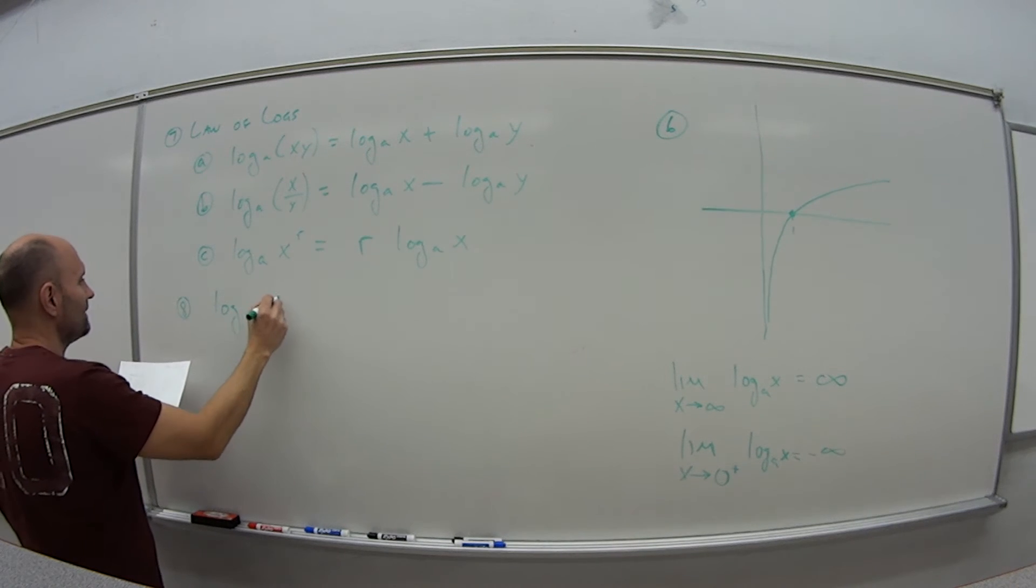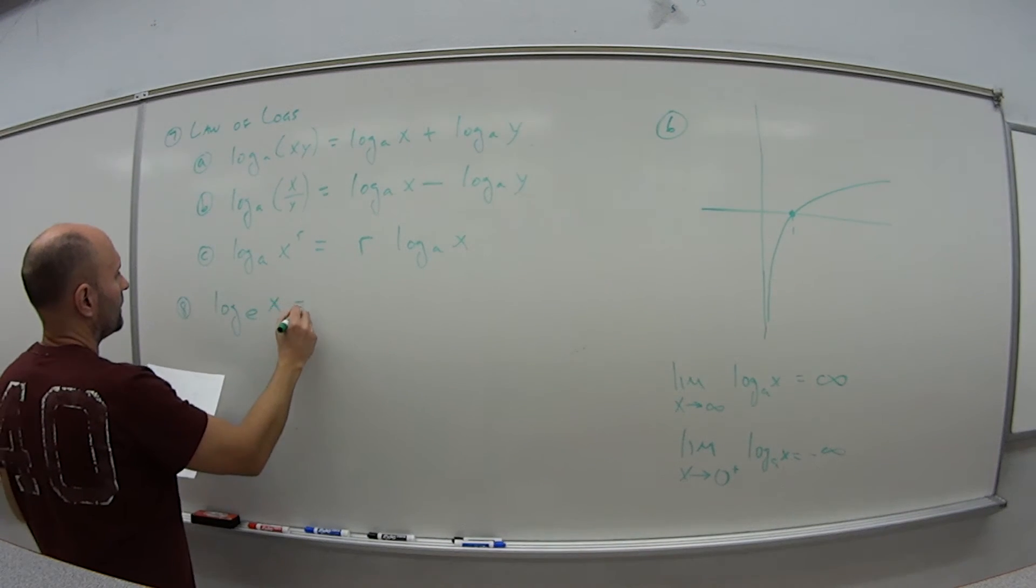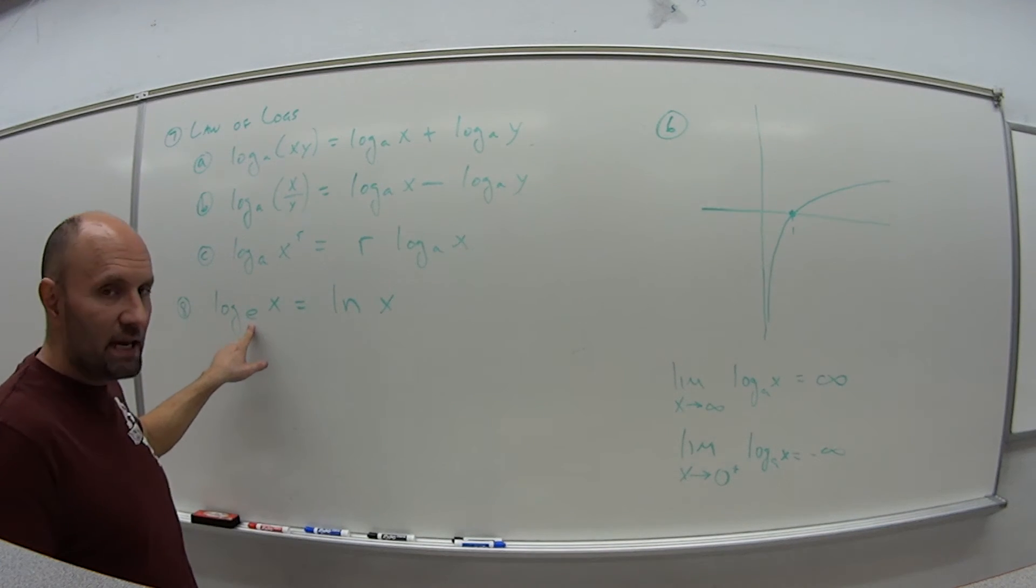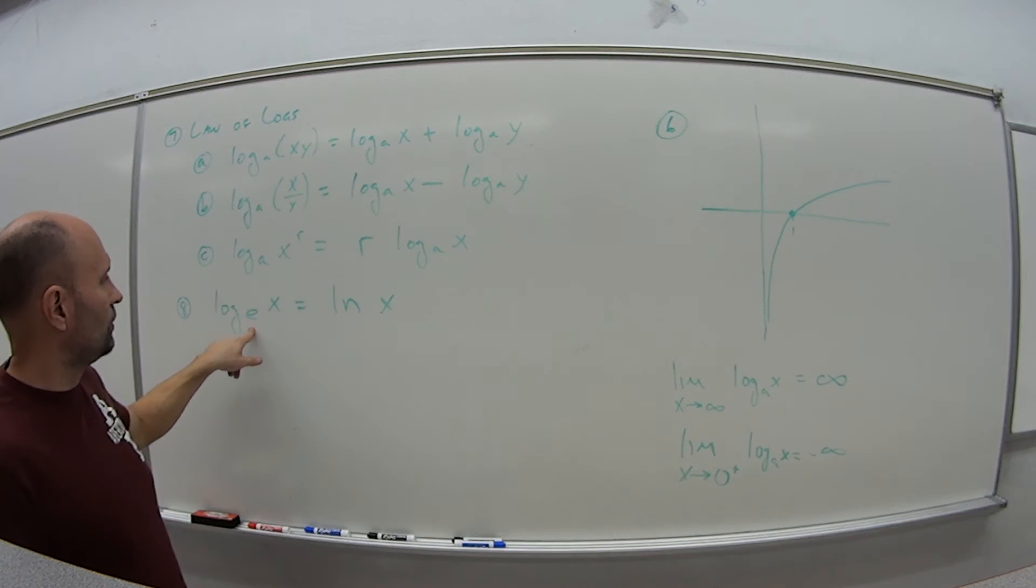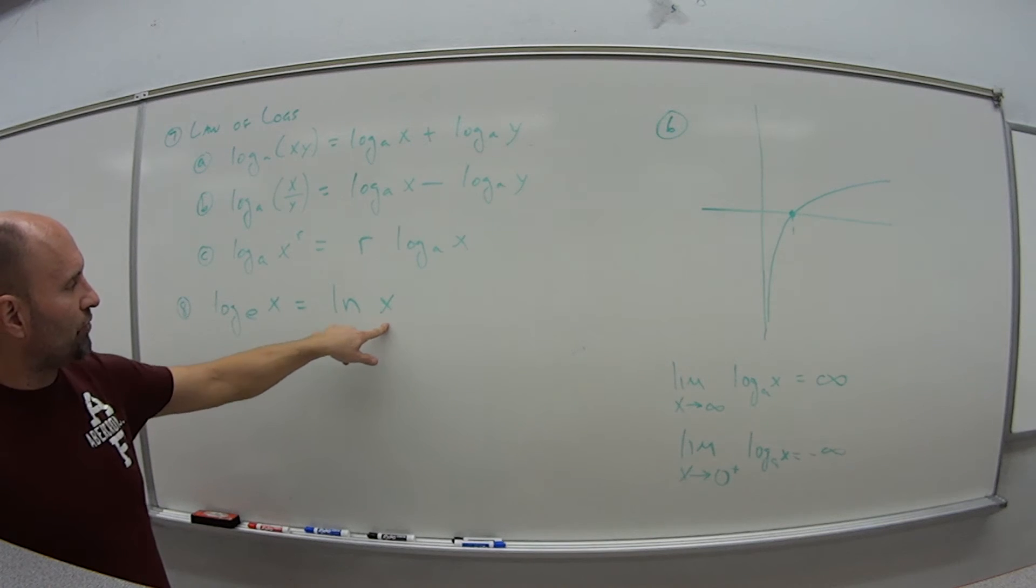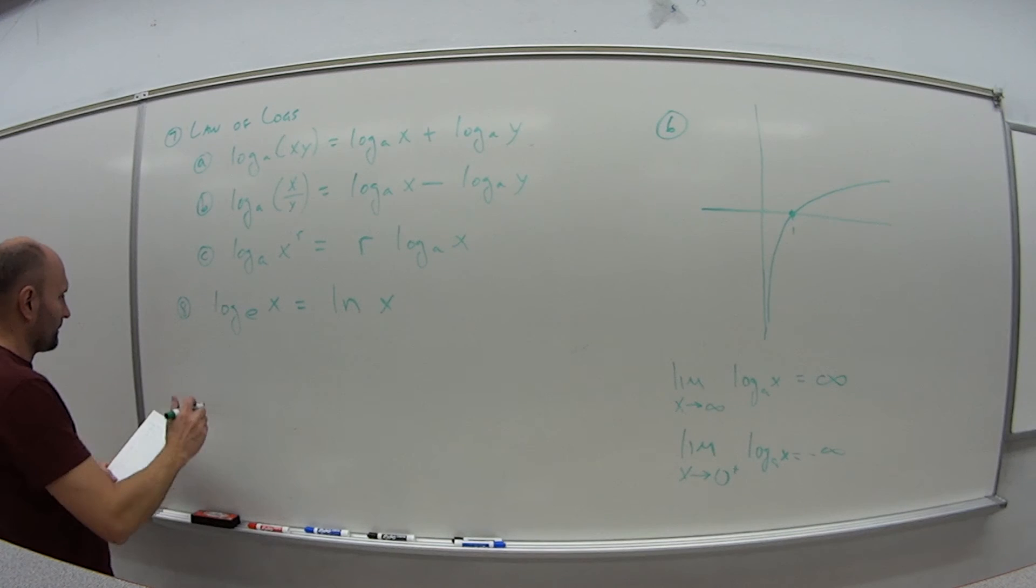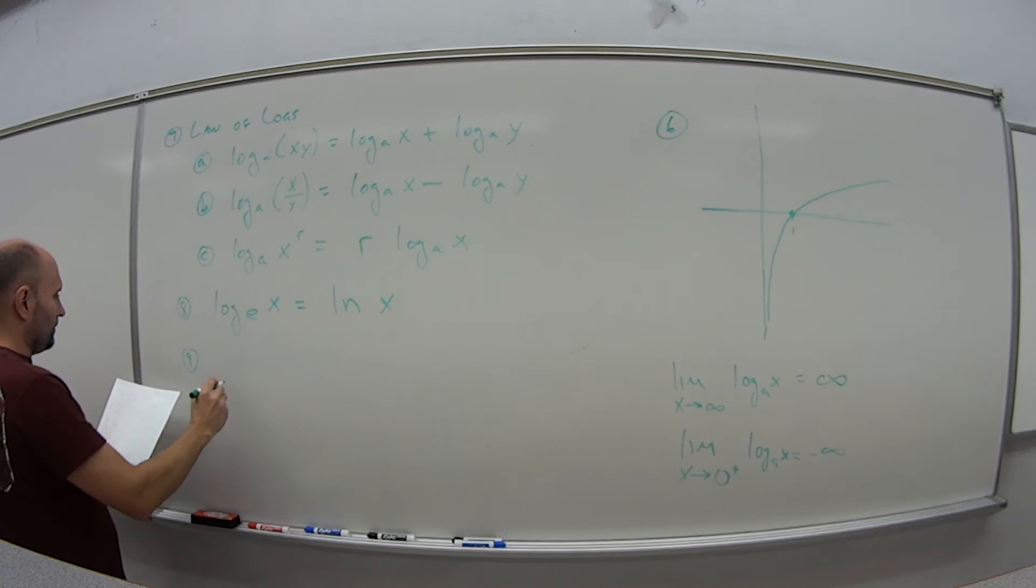Number 8: log base E of X, when we're talking about base E, the exponential, that's considered the natural log. So instead of writing log base E of X, we just say natural log of X. Similar properties hold with our regular log bases.